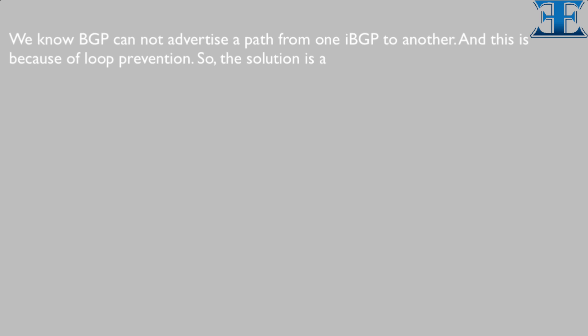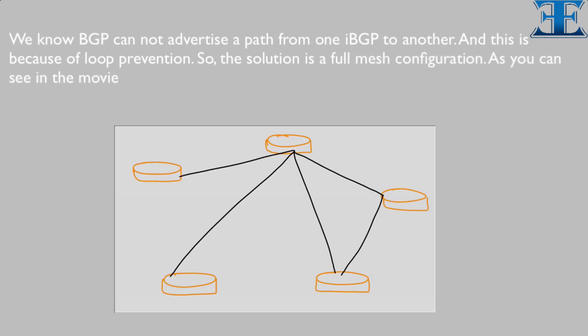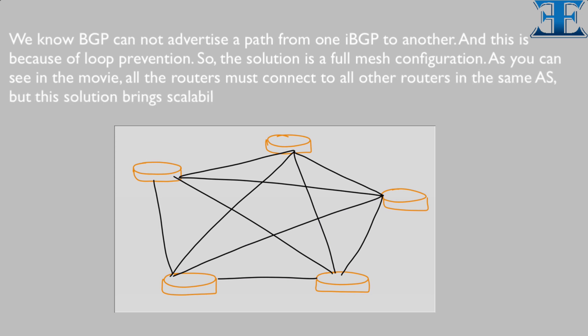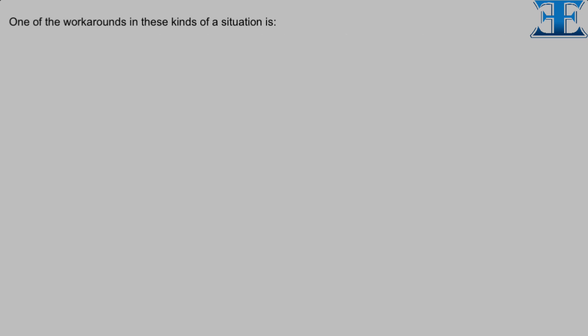We know BGP cannot advertise a path from one IBGP to another, and this is because of loop prevention. The solution is a full mesh configuration — all the routers must connect to all other routers in the same AS. However, this solution brings scalability issues. One of the workarounds in these kinds of situations is the route reflector.